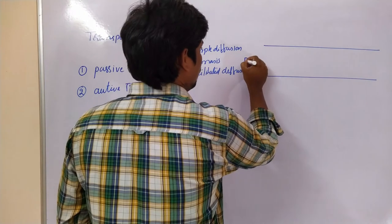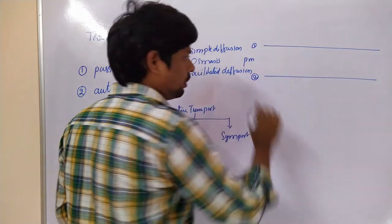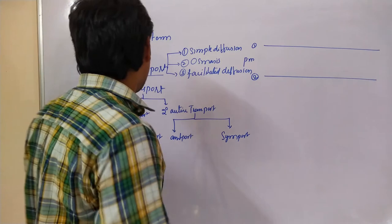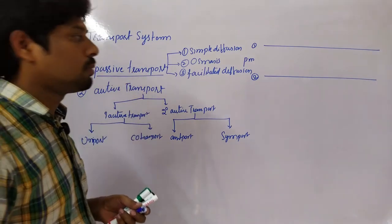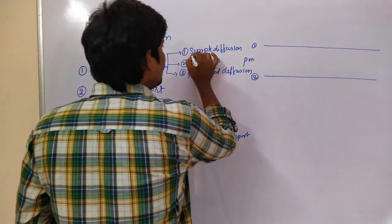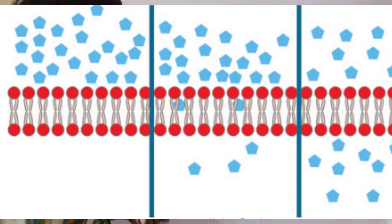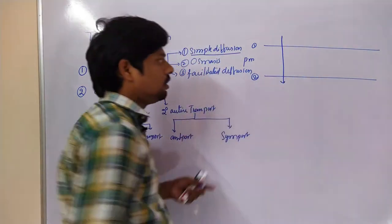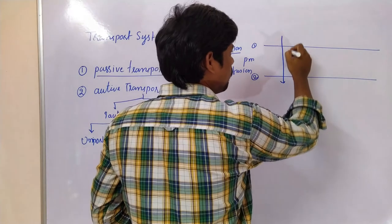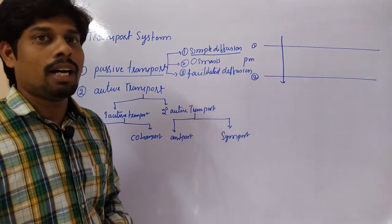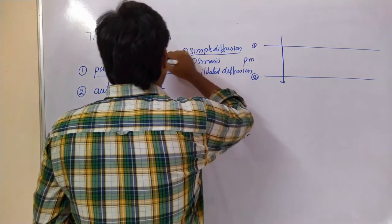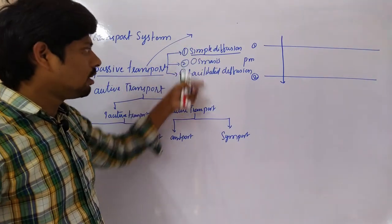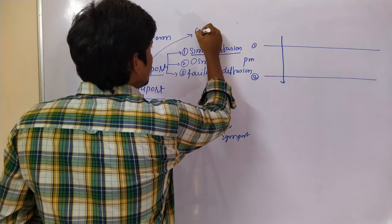This is the plasma membrane — lipid layer 1 and lipid layer 2. We know this very well. I am going to discuss passive transport first, then secondary active transport, then primary active transport. Here is simple diffusion — the movement of a molecule from one side of the plasma membrane across to the other side.